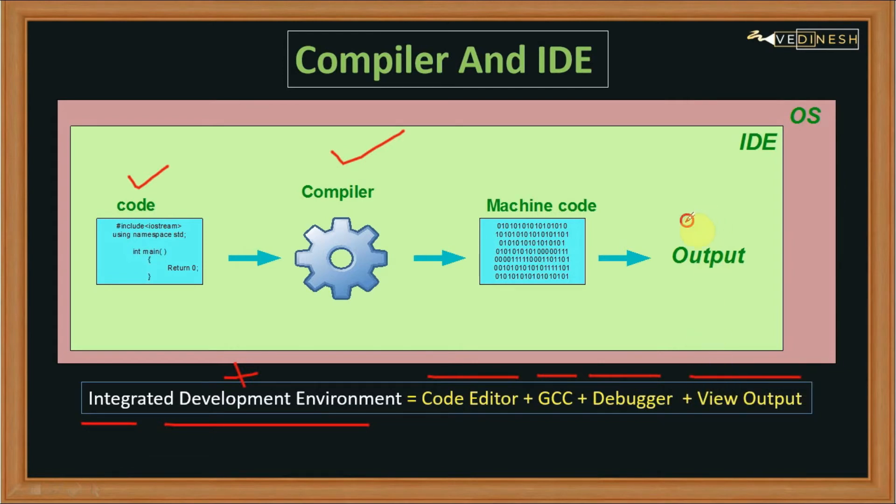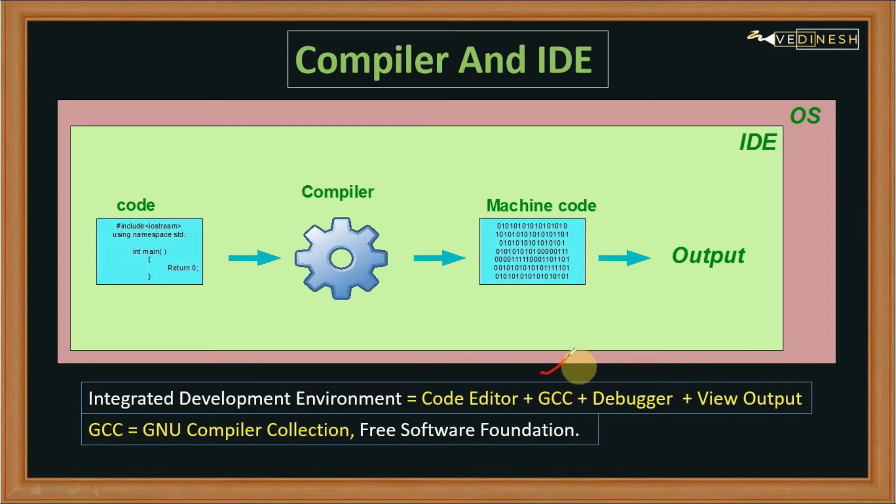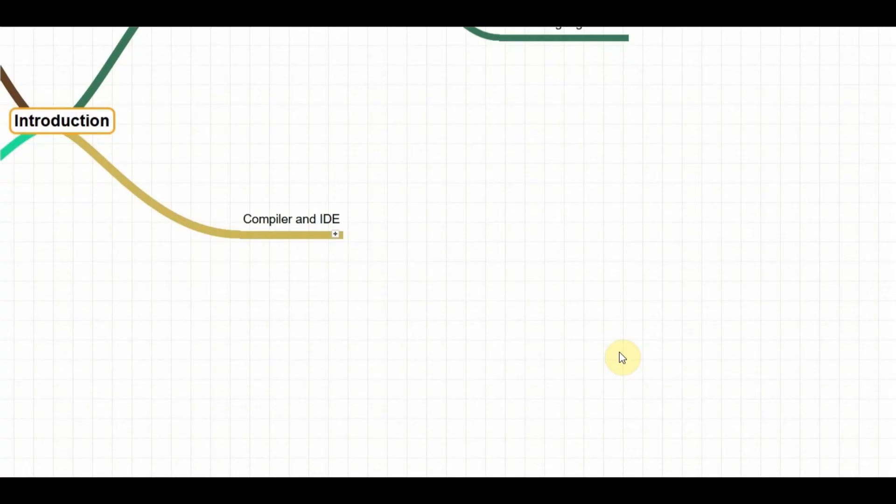Now talking about this GCC, this GCC is a compiler. The full form of GCC is GNU Compiler Collection. It is a foundation which provides free software, meaning free compilers. It is an open source community in which developers can contribute for development of compilers.